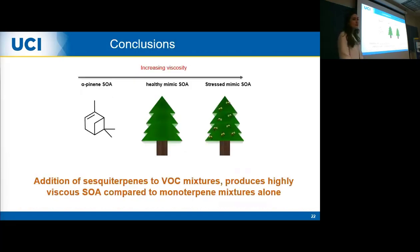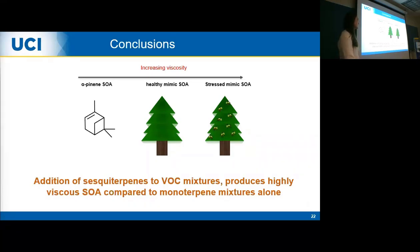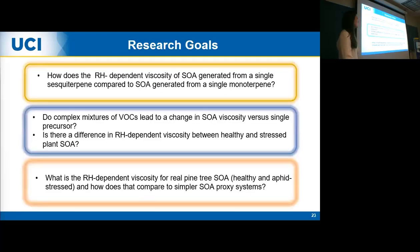In conclusion for this part: alpha-pinene photo-oxidation SOA, which represents the majority of terpenes in the atmosphere and made up 80% of our two mixtures, had the lowest viscosity, followed by healthy plant SOA from monoterpene mixtures, with stressed SOA having the highest viscosity due to 20% added sesquiterpenes. A single component precursor could not accurately represent more complex systems. My next step is to compare these lab-generated mixtures to a real system.